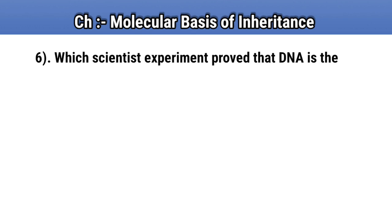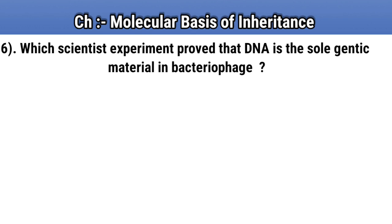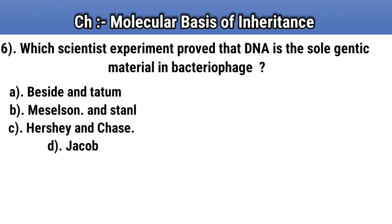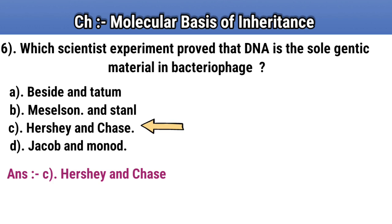Question number 6. Which scientist experiment proved that DNA is the sole genetic material in bacteriophage? Option A: Beadle and Tatum. Option B: Meselson and Stahl. Option C: Hershey and Chase. Option D: Jacob and Monod. Answer C: Hershey and Chase.